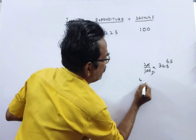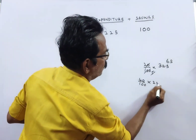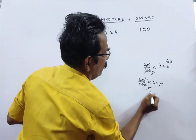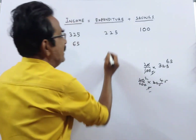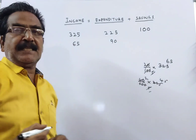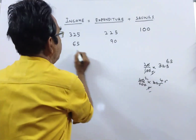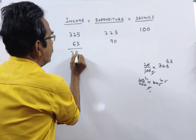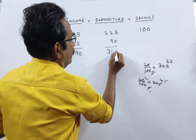And his expenditure is increased by 40%. So, 40% of 225 is 90. His expenditure increased by rupees 90. So now the total income is 390, and total expenditure is 315.